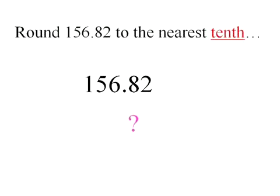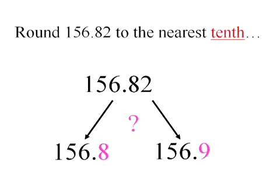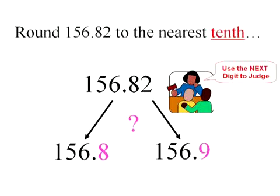So this number is either going to be 156 and 8 tenths with everything gone away, or 156 and 9 tenths with everything else after that gone away. What are we going to use to decide? Still going to use the next digit. You're two. So you know in this case, you're just going to stay the same. 156 and 8 tenths.